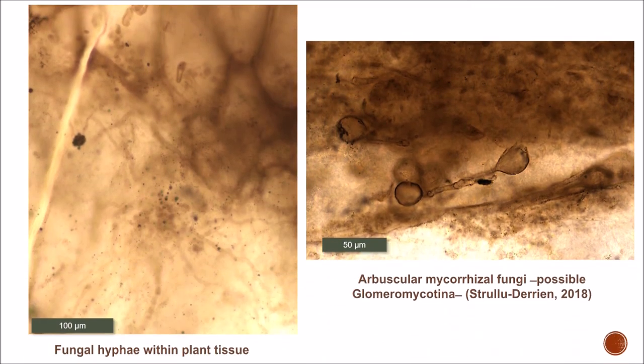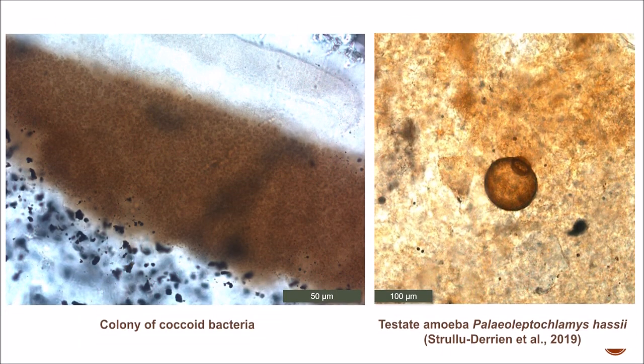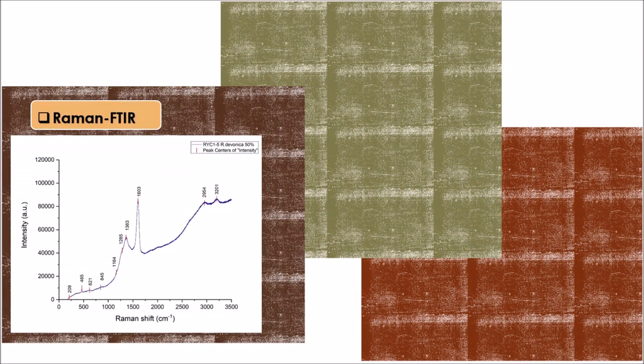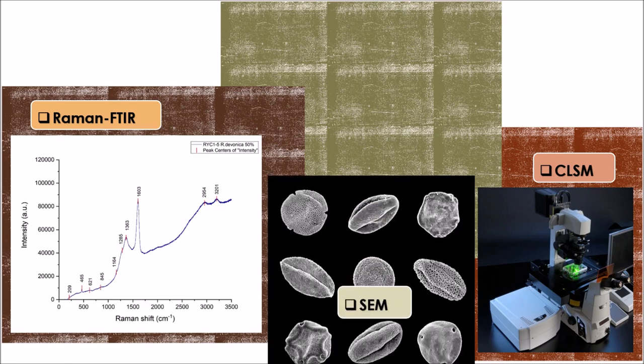Other findings have been fungi and the recently described testate amoebae Palaeoglomus hagii. On the second stage of the research, optical and analytical methods will be used to obtain more chemical and mineralogical information, including Raman microscopy with infrared spectroscopy and confocal laser scanning microscopy.